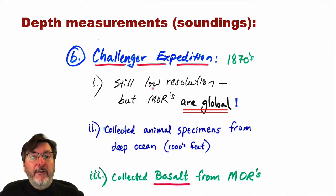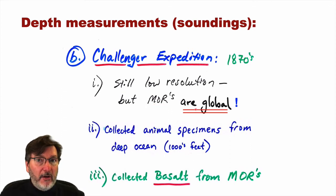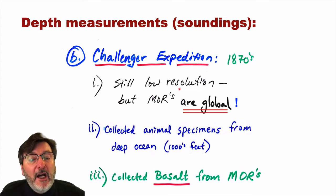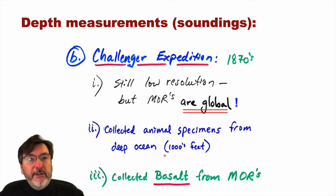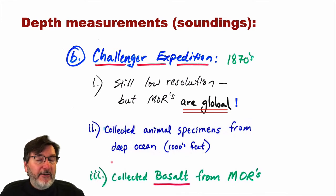The first big important discovery from the Challenger expedition: they collected lots of animal specimens from the deep ocean — thousands of feet, way below Forbes' azoic zone — so that concept was gone. And whenever they pulled up crystalline rock from the seafloor, it was always this igneous rock basalt. It wasn't granite.